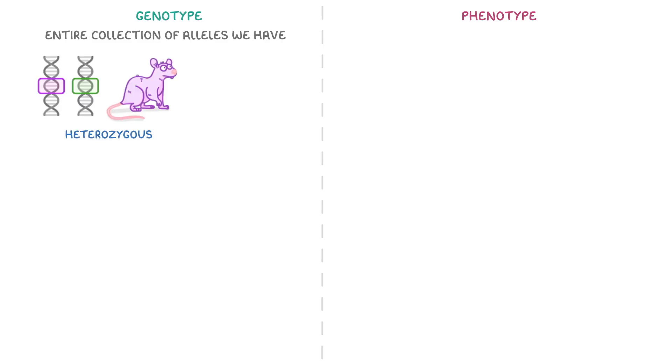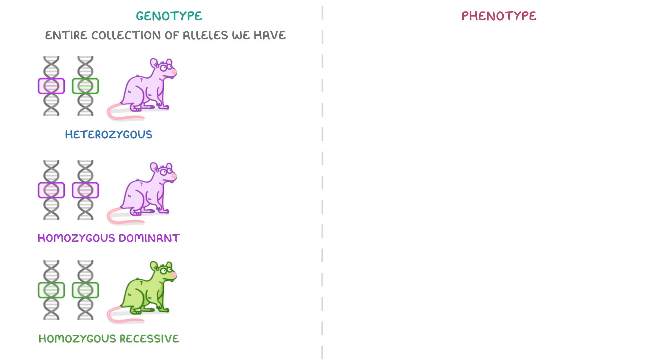Now, the last two terms that we need to cover are genotype and phenotype. The genotype is basically the entire collection of alleles that we have. So if we take the three mice that we used before, the heterozygous mouse, the homozygous dominant and the homozygous recessive one, we would say that they all have different genotypes because they have different alleles and so different genetic codes.